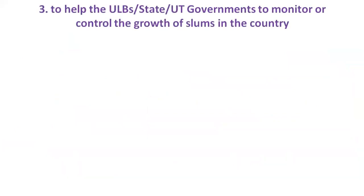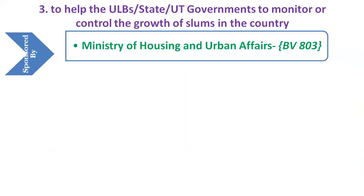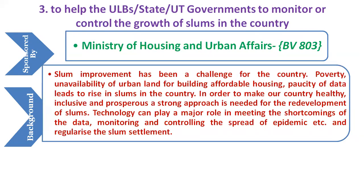The third problem is to suggest a solution to help urban local bodies (ULBs), or state or union territory governments, to monitor or control the growth of slums in the country and develop a self-sustained environment to ensure affordable housing to avoid future slum growth. This is sponsored by the Ministry of Housing and Urban Affairs with code BV803. Slums are areas in which inhabitants lack fundamental resources such as adequate sanitation, improved water supply, durable housing, or adequate living space.